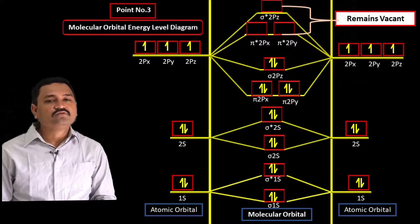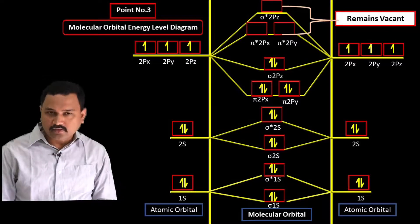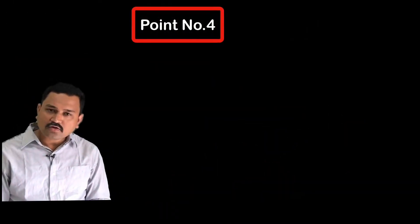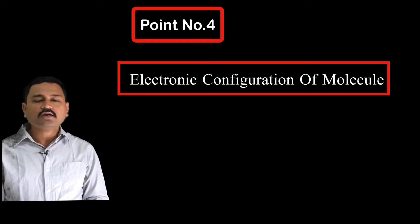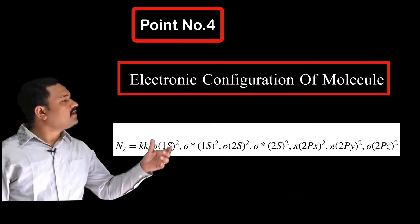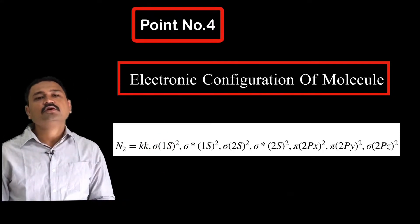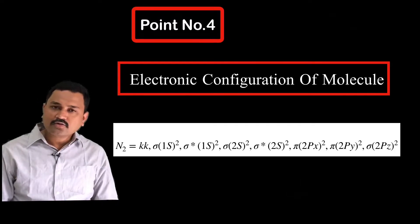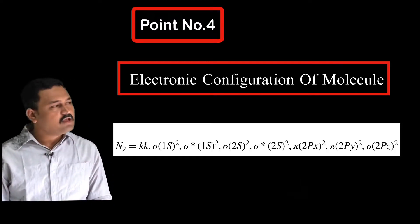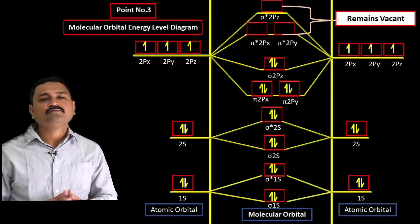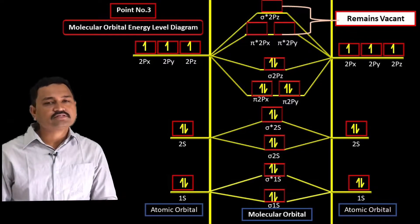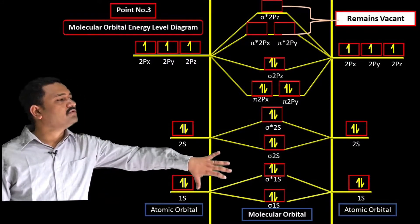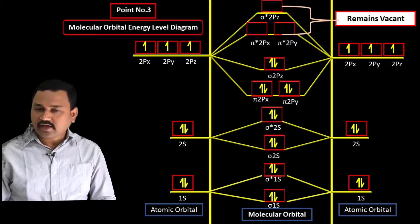Point number four: the electronic configuration of the nitrogen molecule. Based on the molecular orbital energy level diagram constructed in point three, the electronic configuration of N₂ is: σ1s², σ*1s², σ2s², σ*2s², π2px², π2py², σ2pz².